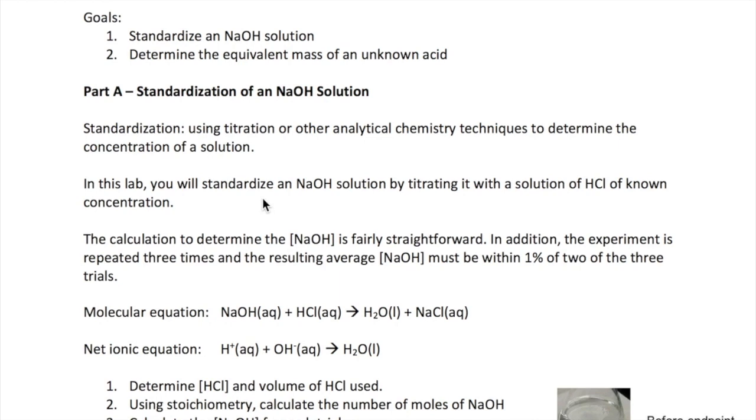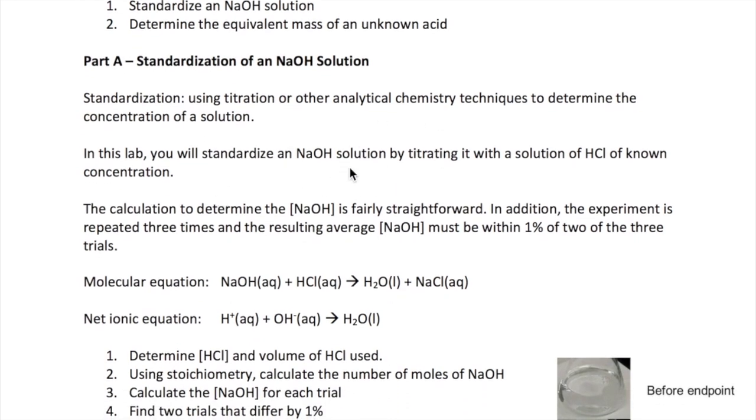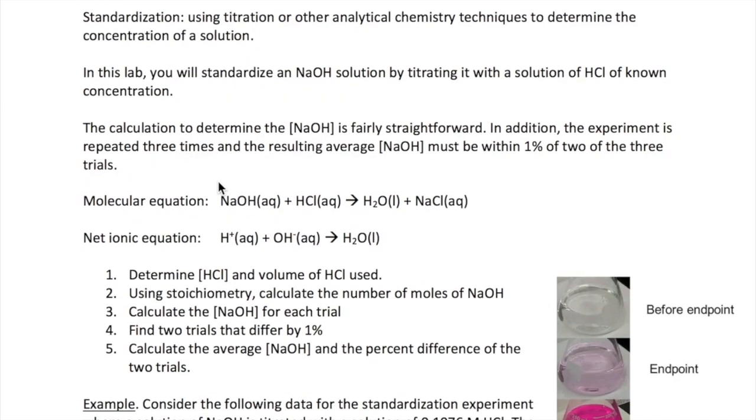In part A, you'll carry out a standardization experiment. This is something you do when you're trying to determine the concentration of a solution. In this lab, you will do this by titrating an NaOH solution whose concentration is not known using an HCl solution whose concentration is known. When you get to the equivalence point, which is when the number of moles of acid and base are equal, you can do a fairly straightforward calculation to determine the concentration of NaOH.